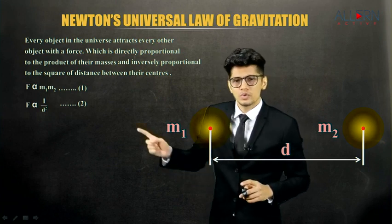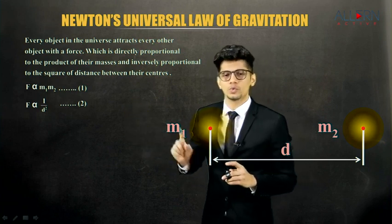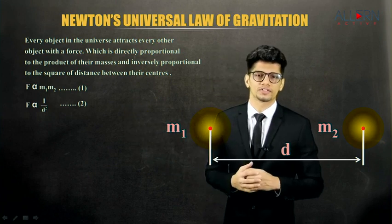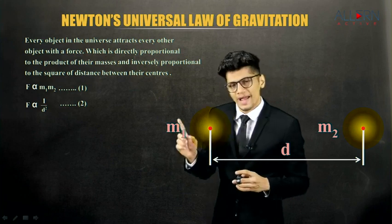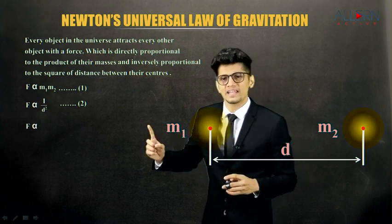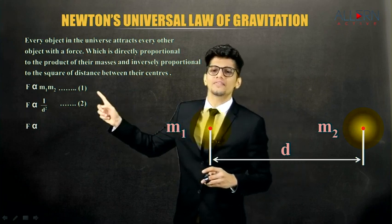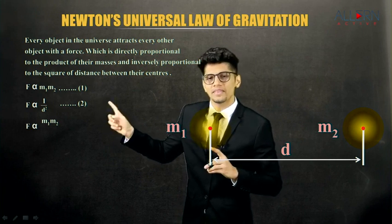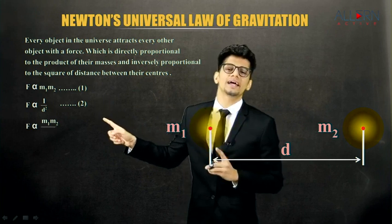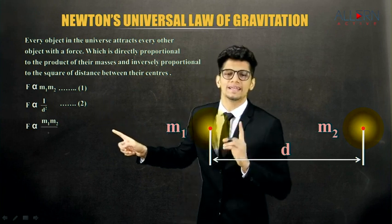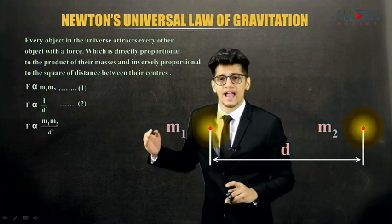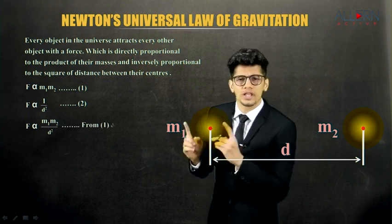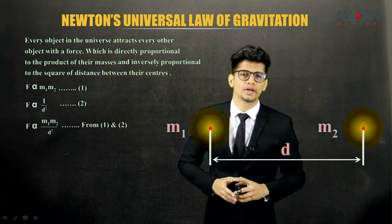We'll now use equation 1 and equation 2 and merge them. F remains on the left-hand side. In the numerator we write m1 into m2, and in the denominator we write d square. So we get: F alpha m1 m2 upon d square.